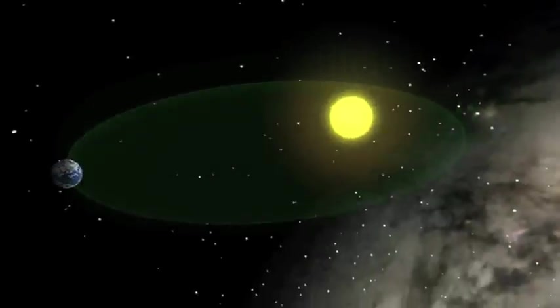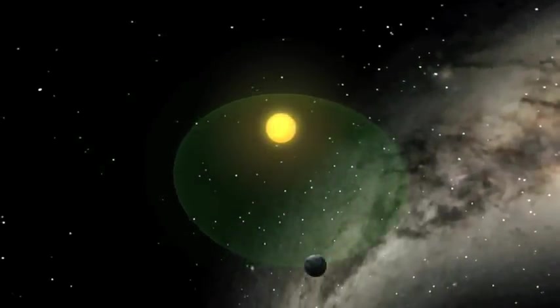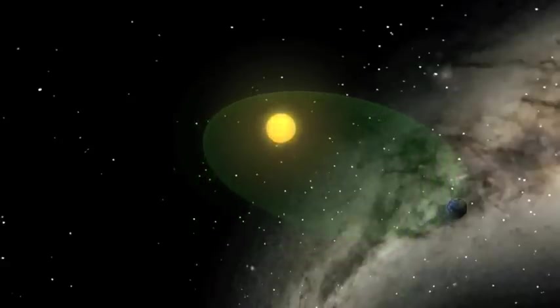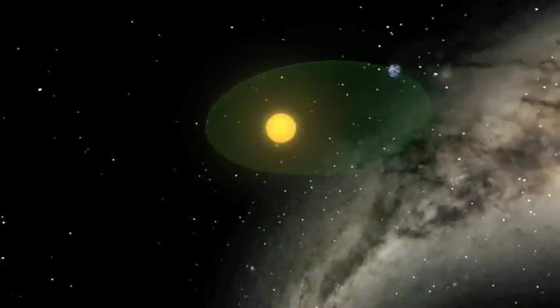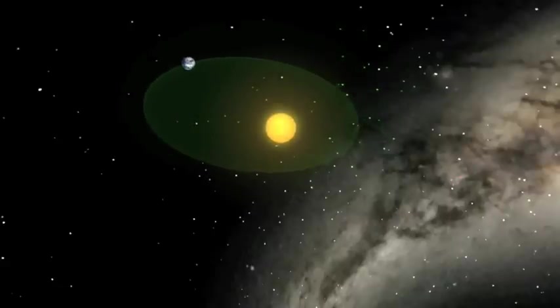In addition, the gravitational effects of other planets cause the ellipse of our orbit to slowly spin around the Sun. It takes about 112,000 years for the ellipse to revolve once, relative to fixed stars.